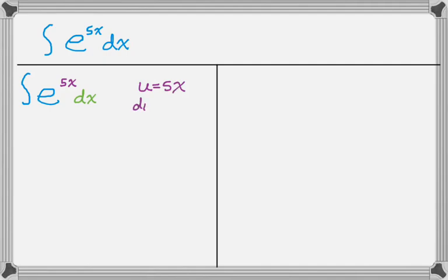So u is equal to 5x, so then du is going to be 5 dx. And I have dx, so I want to be able to substitute directly for that. So dx is 1 fifth of du.